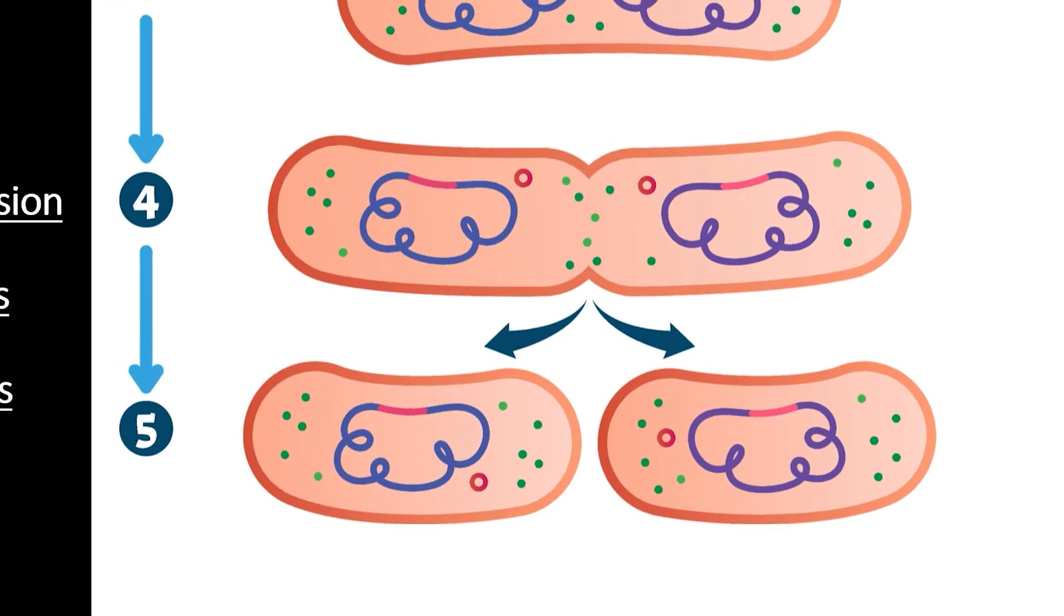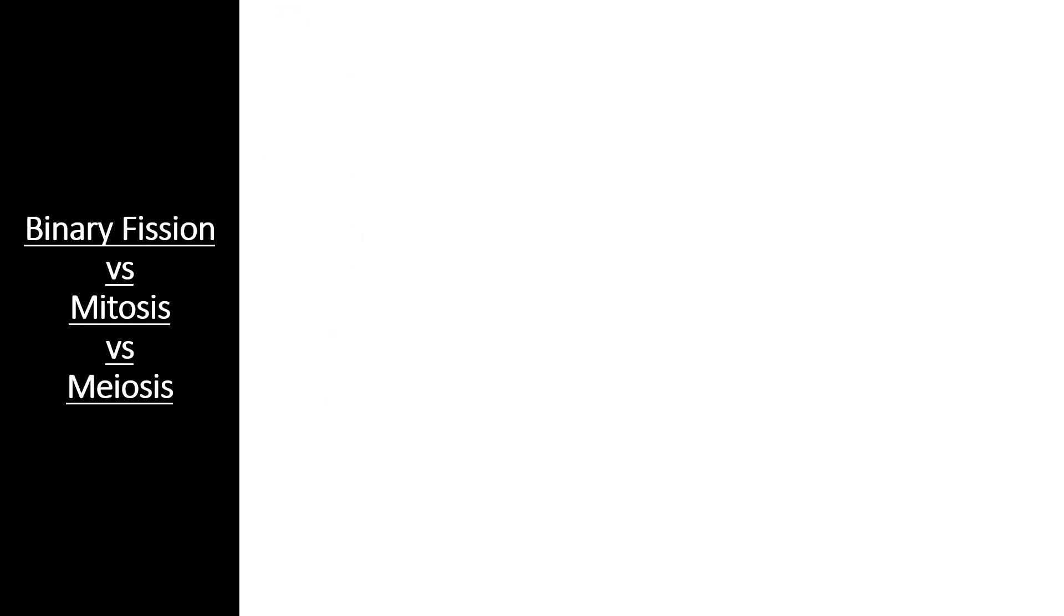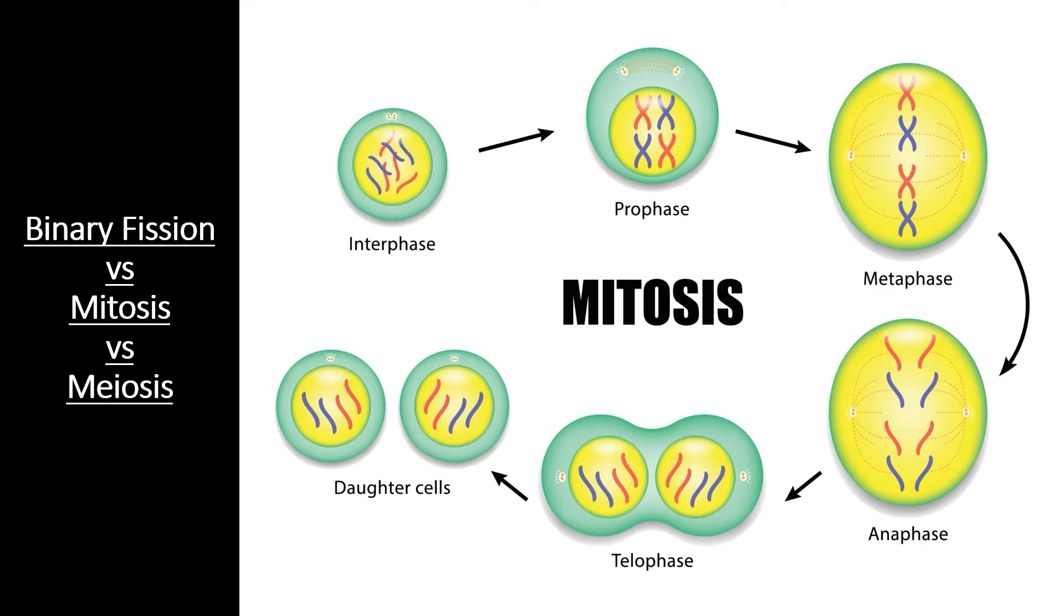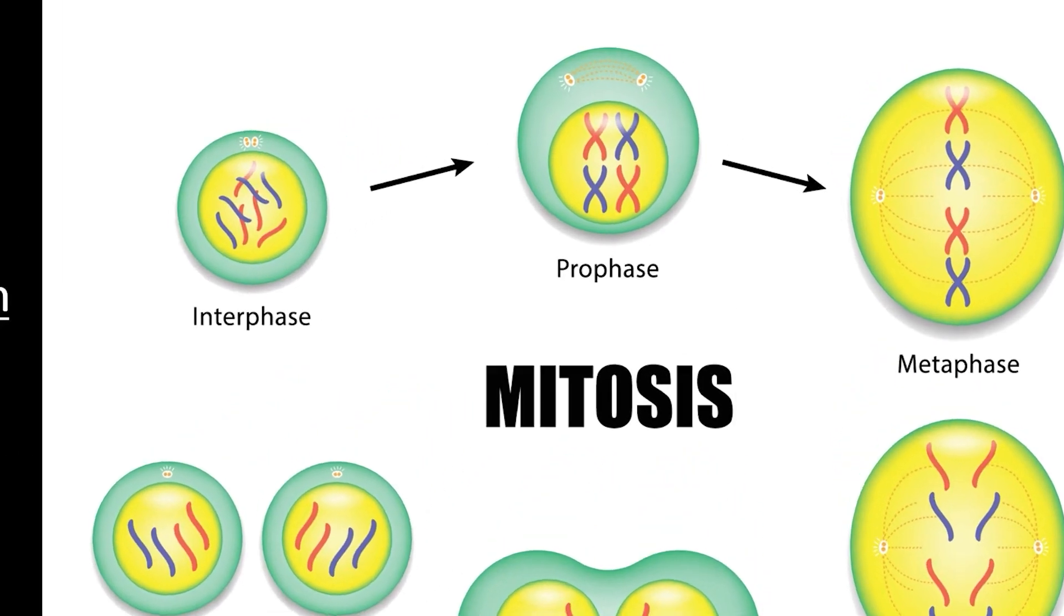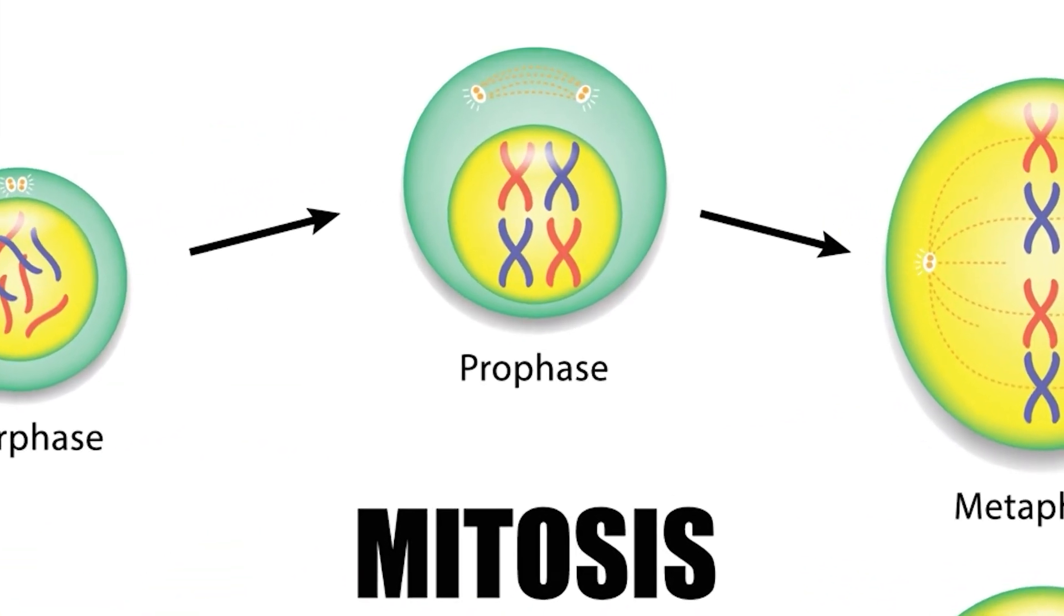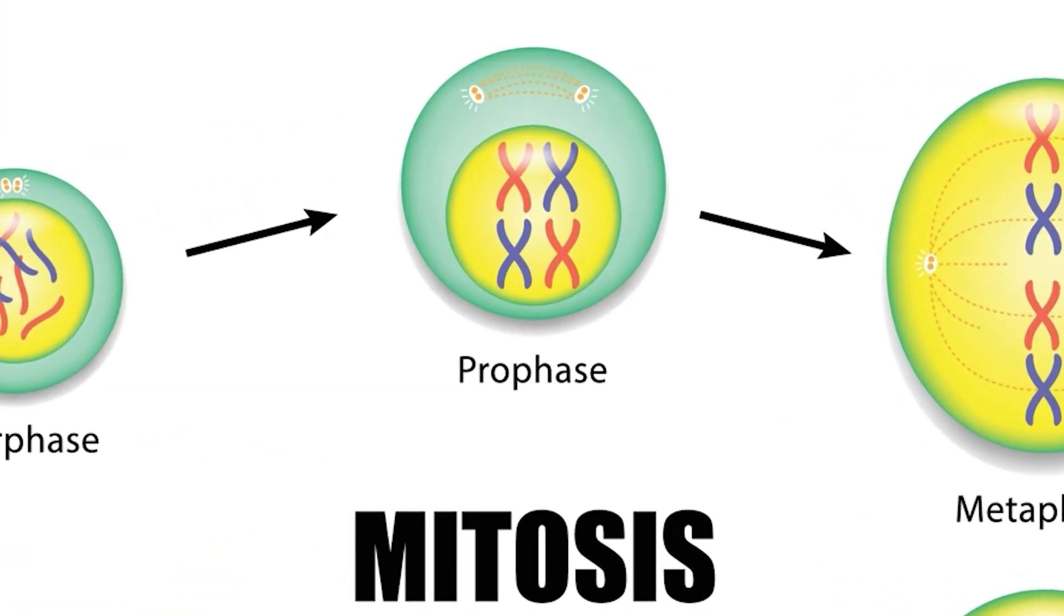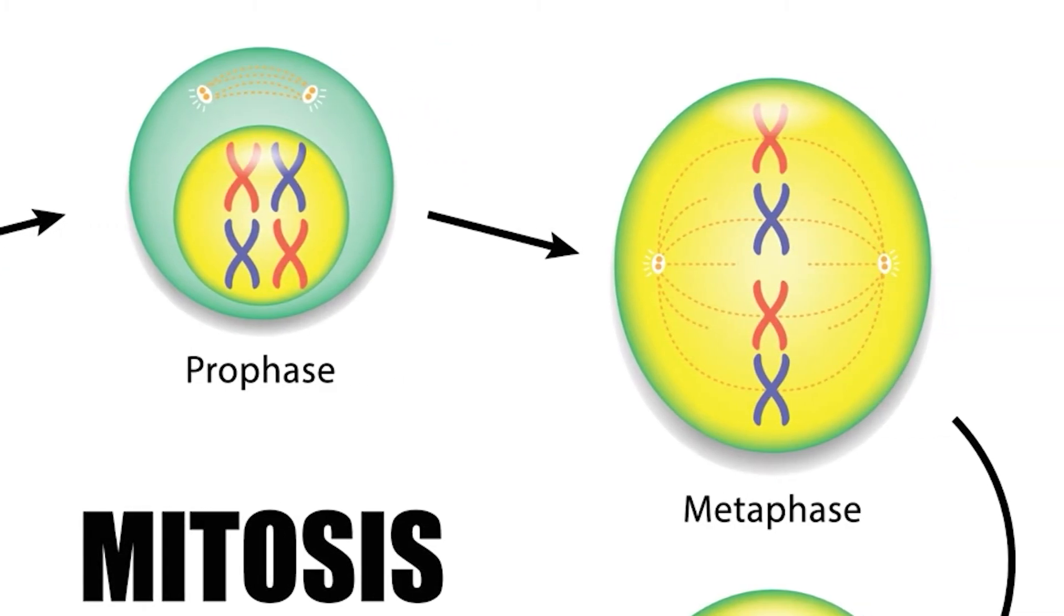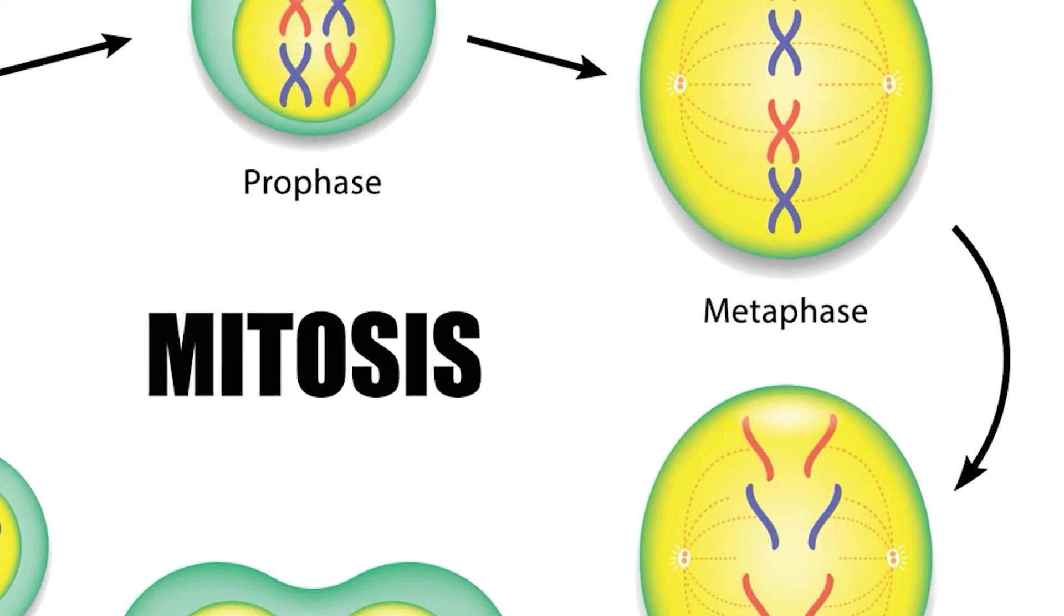By contrast, the process of mitosis is much more complex. The process of mitosis has many more steps for several reasons. First off, eukaryotes typically have more than one chromosome. As these chromosomes duplicate, this means there are twice as many chromosomes the cell must properly separate in order to divide into two functional cells. This is why sister chromatids get bound at the centromere during prophase and into metaphase. This ensures that each new cell will receive one copy of each chromosome.